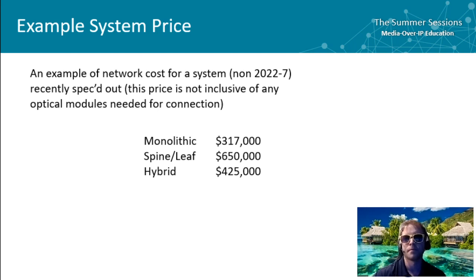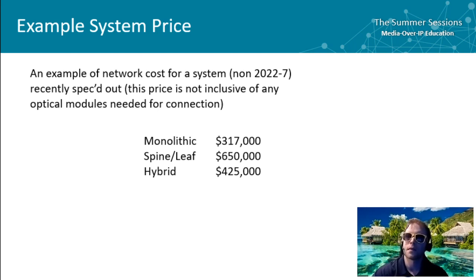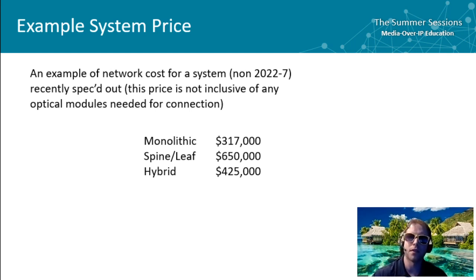In this system, we're looking at roughly a couple hundred endpoints. Those endpoints vary in bandwidth from 10 gig interfaces to 25 gig interfaces, up to some 40 and 100 gig interfaces.